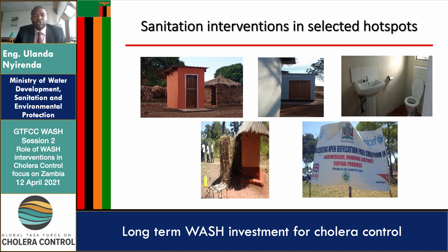We are not only addressing water supply — we are also looking at sanitation and hygiene. New sanitation facilities are being placed at public places and institutions such as schools and healthcare facilities. In rural communities, we encourage people to build their own sanitation facilities using locally available materials. To achieve this, we undertake behavioral change activities, including community-led total sanitation, where we trigger people to realize the benefits of having and using a toilet — and these are working very well.